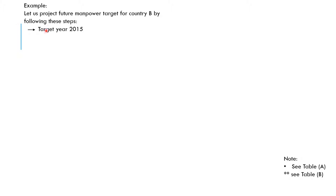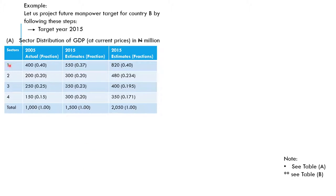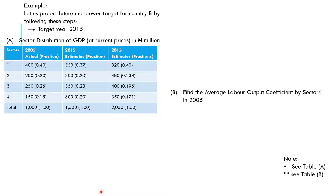Now let's look at a worked example. We will project future manpower targets for Country B. The target year is 2015 — that is the year we want to project manpower for. We set up a distribution of GDP at current price in Naira million. The Naira sign here means everything is in millions of Naira. Sectors are numbered one to four. For 2005, we have the actual values with fractions shown in brackets. For 2015, we have the estimates.